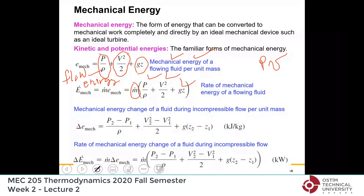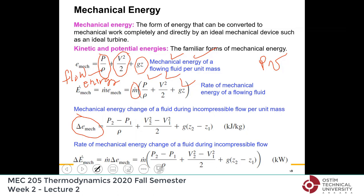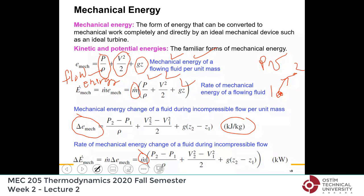In thermodynamics it is also good to mention these. If a fluid goes through a process from state 1 to state 2, the change in its mechanical energy per unit mass is simply (p2 minus p1)/rho plus (V2-squared minus V1-squared)/2 plus g(z2 minus z1). Multiply that by mass flow rate and you get the rate of change of mechanical energy.